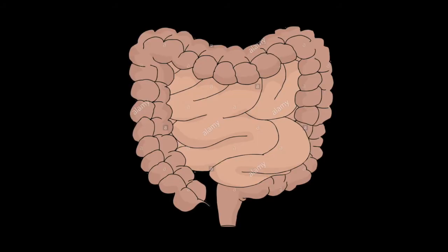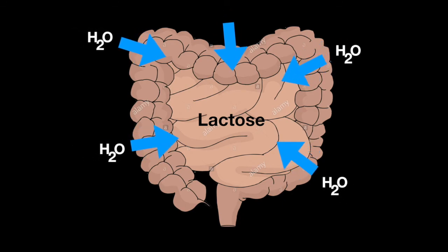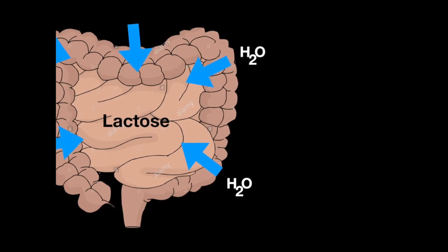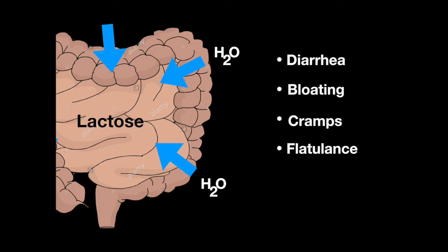In individuals with lactose intolerance, the lactose remains in the GI tract without being broken down. Lactose increases the osmotic pressure, sucking water into the GI tract. This results in diarrhea, bloating, cramps because the body becomes dehydrated, and flatulence.